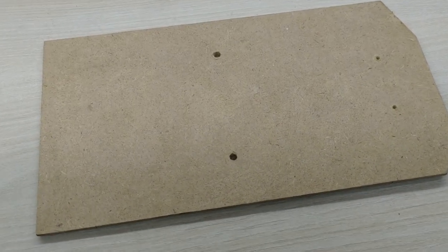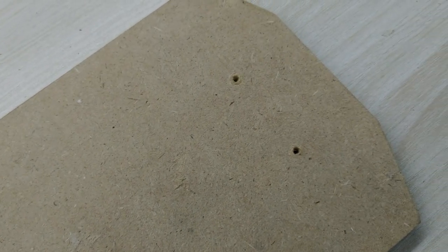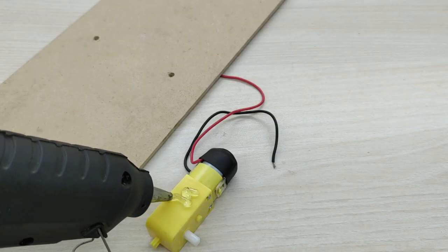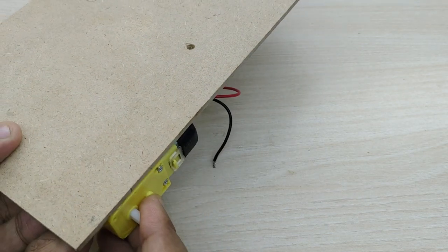First, take a plywood board and cut into the shape as shown. Also make two holes for the motor wires to pass through and also for fixing the caster wheel. The drawing template for the plywood is given in the description box.